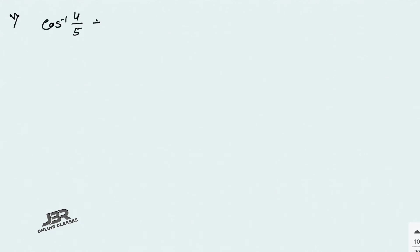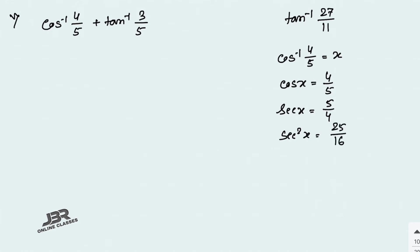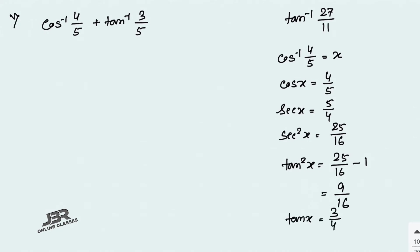Sum number 5: cos⁻¹(4/5) + tan⁻¹(3/5) = tan⁻¹(27/11). We convert cos⁻¹ to tan⁻¹. Let cos⁻¹(4/5) = x, so cos(x) = 4/5, sec(x) = 5/4, sec²(x) = 25/16. Then tan²(x) = 25/16 − 1 = 9/16, so tan(x) = 3/4, giving x = tan⁻¹(3/4).